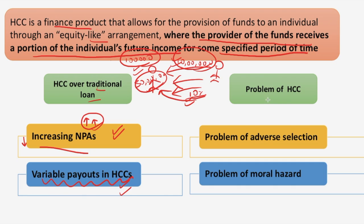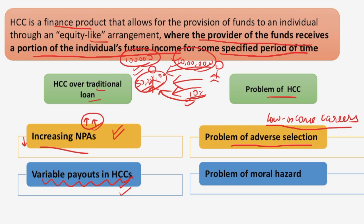Now what are the problems associated with HCC? The first problem is adverse selection. The HCC payout is dependent upon your future income, so students who generally opt for such programs are those who expect to pursue low-income careers and are least likely to be able to repay traditional loans. The providers of HCC funds are not in a favorable position because only those students with low-income careers will opt for it — a student earning 50,000 per month will take HCC whereas a student earning 1 lakh will not.